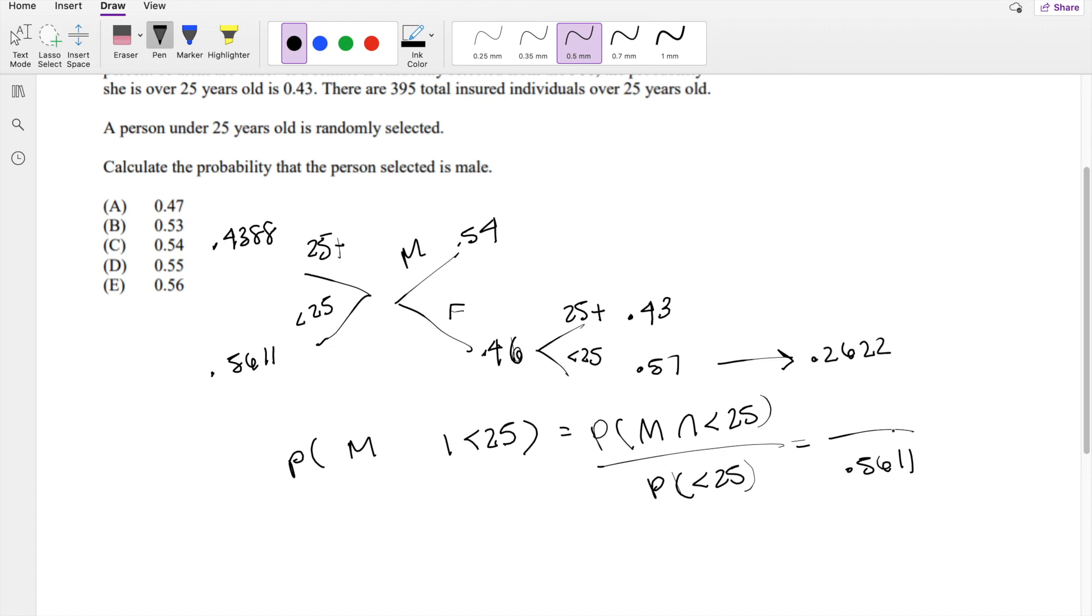And that means female and less than 25 must be 0.5611 minus 0.2622, which is equal to 0.2989.